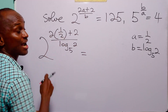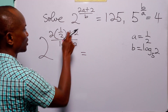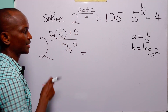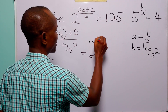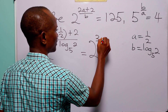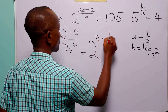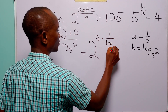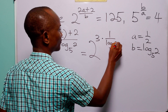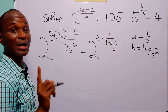Now, 2 times 1/2 is 1, and 1 plus 2 is 3. So this becomes 2 to the power 3 multiplied by 1 over log base 5 of 2.